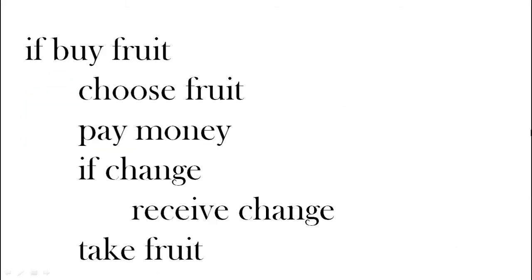Another example: when we bought the fruit before we said choose fruit, pay money, receive change, take fruit. But we would only receive change if we had some change. If it was the correct money we wouldn't. So here we can add in another if statement saying if there is change, receive the change.